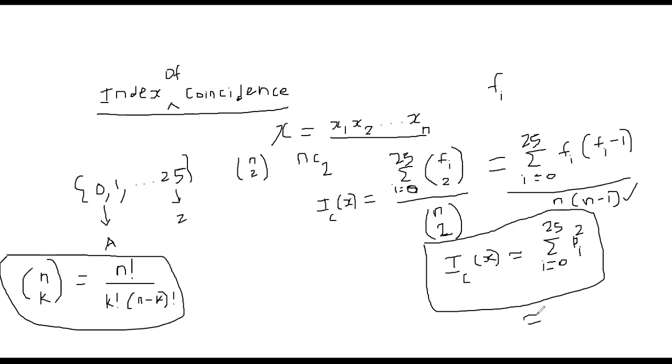And it turned out that this summation value is approximately the same as for English language at 0.065, approximately 0.065. So given a string x now, we can compute its index of coincidence using this nice little formula that you are seeing here.